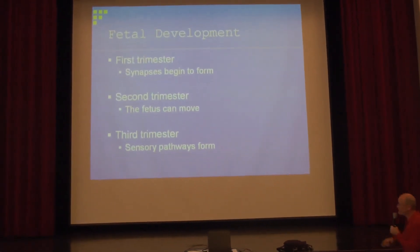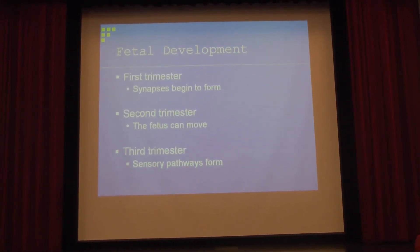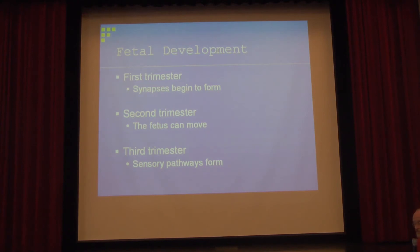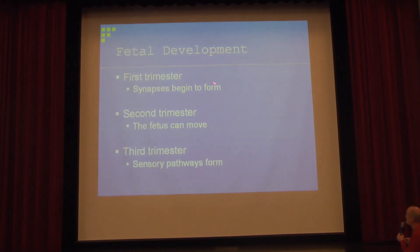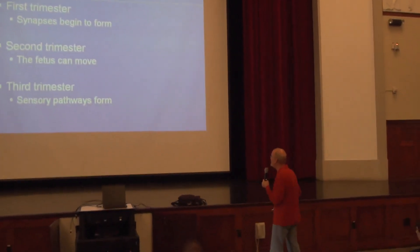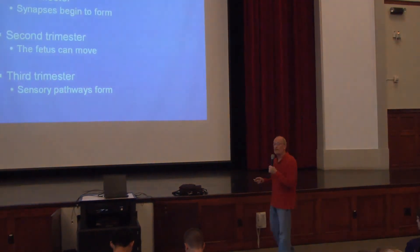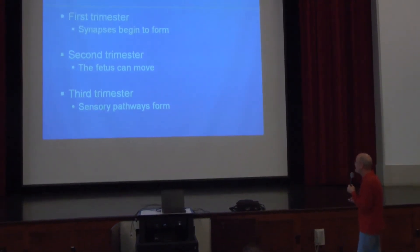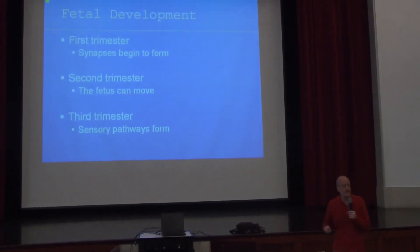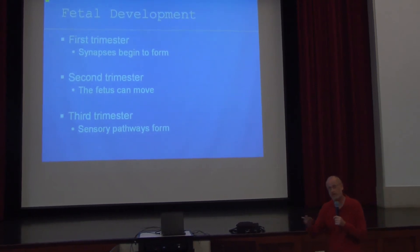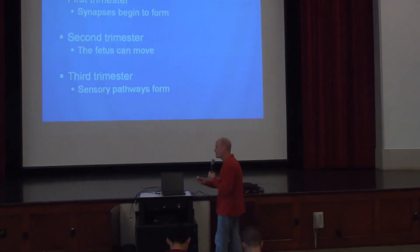In fetal development, you start as a zygote — a single cell — then cell divisions bring you through embryo to fetus. Synapses begin to form very early on, so structural and functional connections between neurons form early. You get motor activity in the second trimester, and sensory pathways begin to form in the third trimester. You're building the complexity of the nervous system throughout the pregnancy.